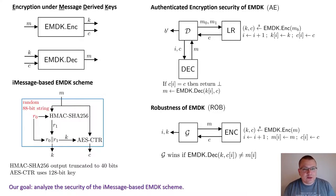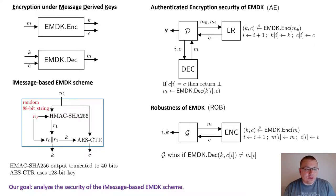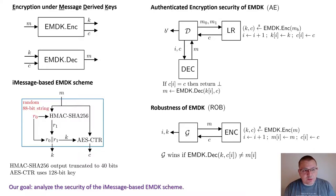The second security notion we consider is the robustness of an EMDK scheme. The security game provides the adversary with access to an encryption oracle that encrypts arbitrary messages. The goal of the adversary is to find a key that decrypts any of the obtained ciphertexts into a message different from the plaintext originally encrypted to produce that ciphertext.